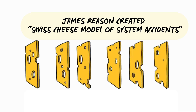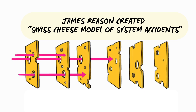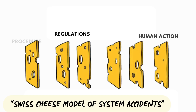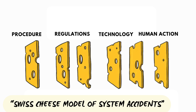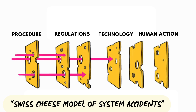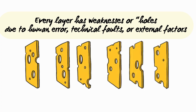In any system there are multiple layers of defense designed to prevent accidents, such as procedures, regulations, technology, and human actions. Each layer acts as a barrier, but none of them are perfect — every layer has weaknesses or holes, similar to swiss cheese. These holes can be due to human error, technical faults, or external factors like bad weather.